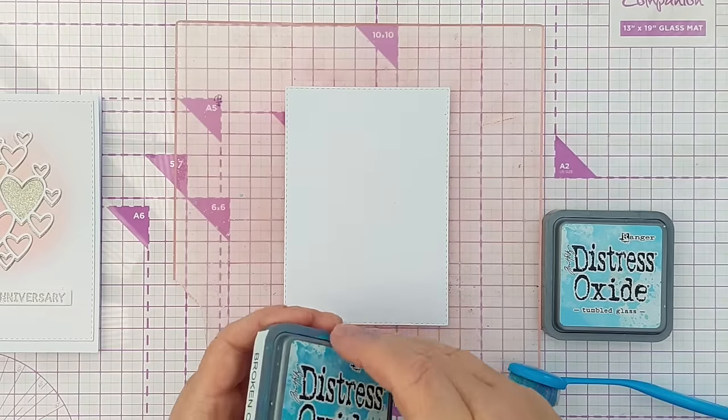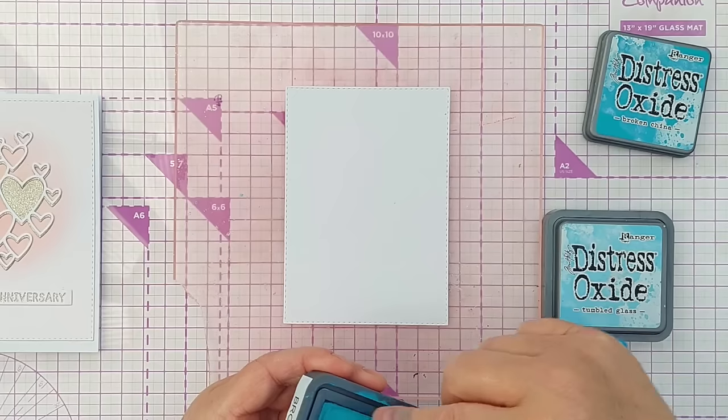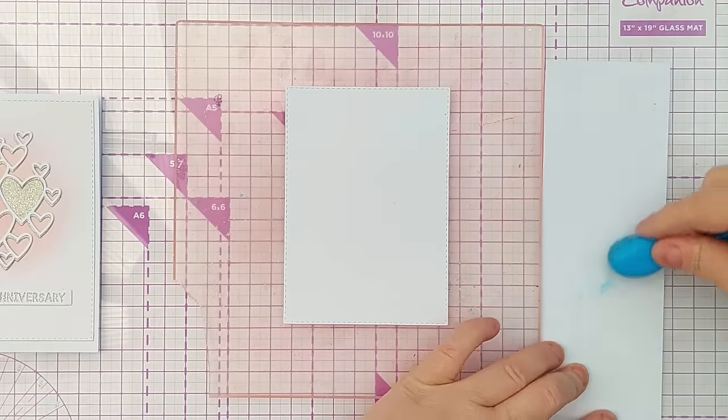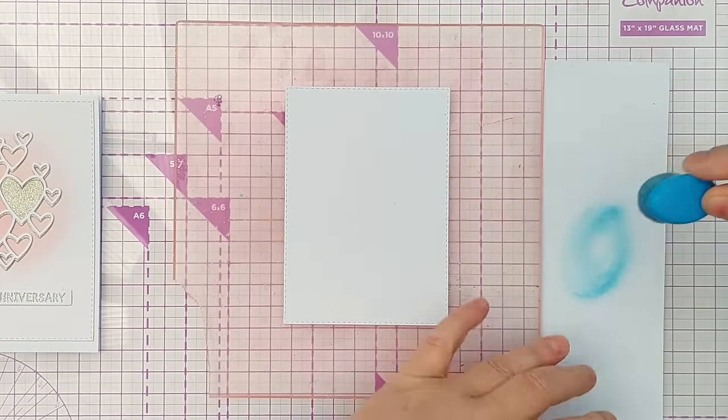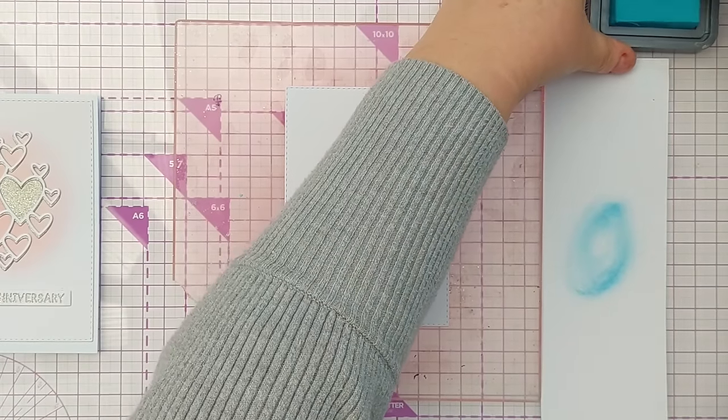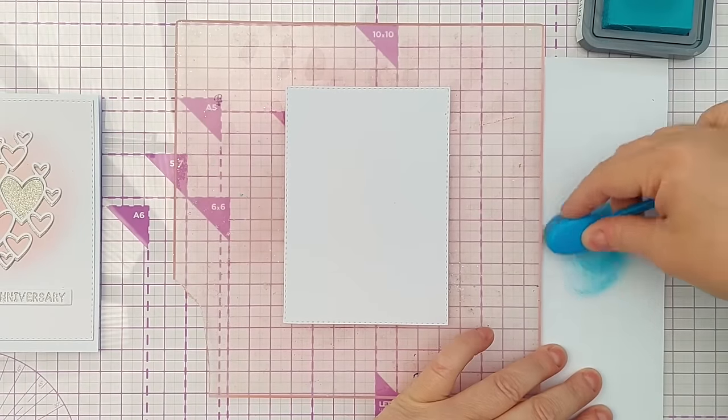I'm going to start by adding the broken china which is the darker of the two colors. I'm going to add that in the middle of my card but I don't want too much color, so I'm going to load up my brush so that it's got lots of broken china on it but brush it off a bit first on some scrap paper so that I've got a bit more control over how much I add.